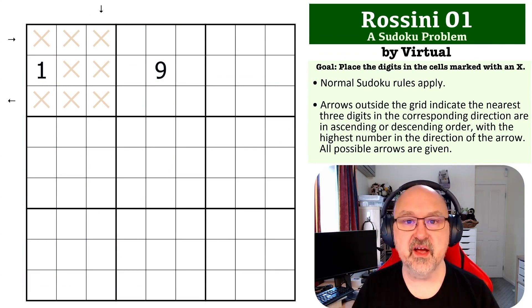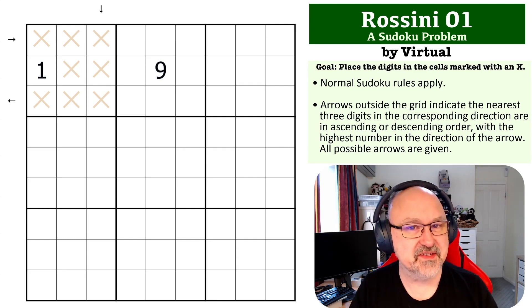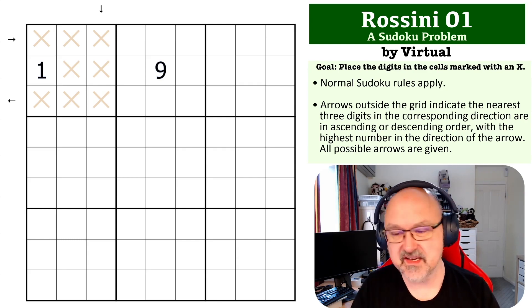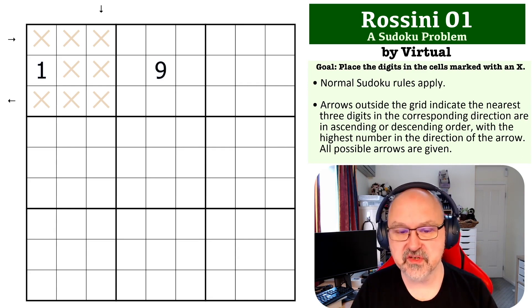Rossini is not a variant you see very often. I've seen it a couple of times in Sudoku competition packs and stuff like that, so you don't see it very often in things like the CTC archive, but it is an interesting constraint that's been around for quite a long time.